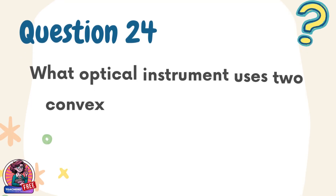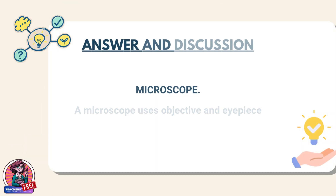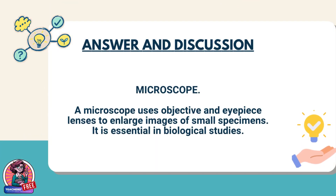Question 24. What optical instrument uses two convex lenses to magnify tiny objects? Answer: microscope. A microscope uses objective and eyepiece lenses to enlarge images of small specimens. It is essential in biological studies.